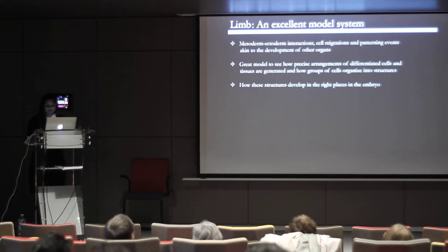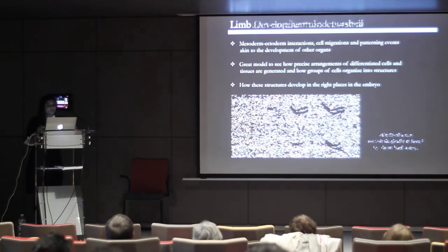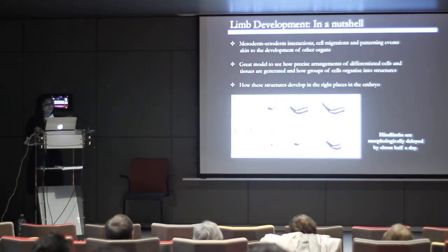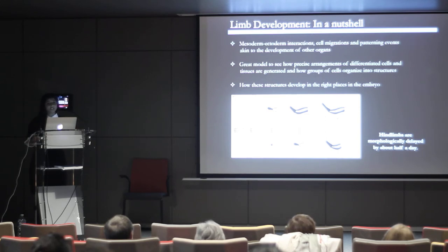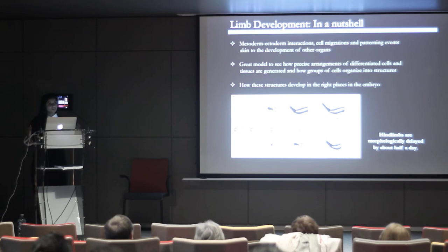The limb is an excellent model system. If you look at the development of a limb in itself, it develops from a very small flank of tissues, and it's fascinating to see how it basically grows into this complicated structure. All of this happens in a very short yet critical phase during embryonic development, namely between E9.5 to E13.5. It's worth noting that even though the hindlimbs and the forelimbs are developing in a very similar fashion, the hindlimbs are morphologically delayed by about half a day.